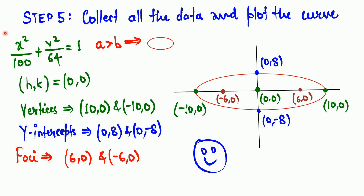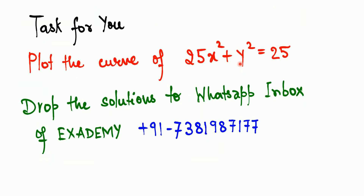The equation is x²/100 + y²/64 = 1. Since a > b, this is a horizontal ellipse. Center (0, 0), vertices (10, 0) and (−10, 0), y-intercepts (0, 8) and (0, −8), foci (6, 0) and (−6, 0). Once you have all these points, simply sketch and mark them to draw the ellipse.